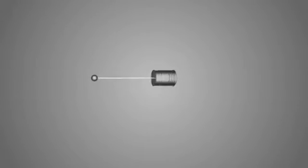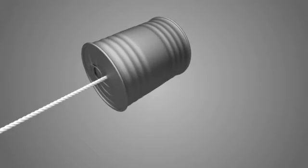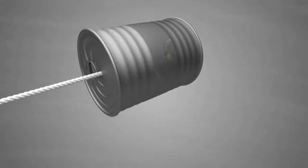As we saw with the can that was attached to the string, the centripetal force is the force that creates the tension on the string, the center-seeking force. There are two perspectives in this example, outside of the can and inside the can.